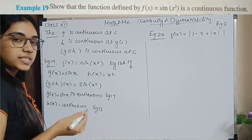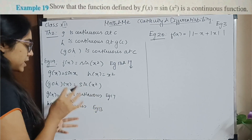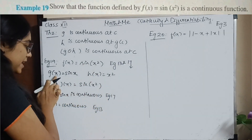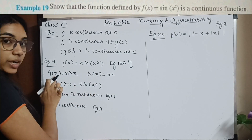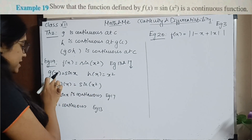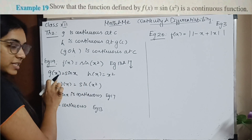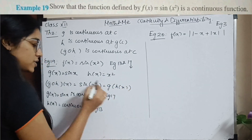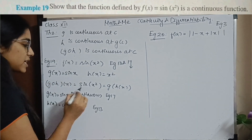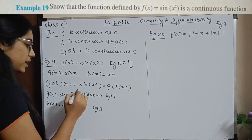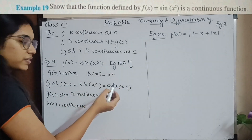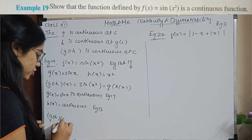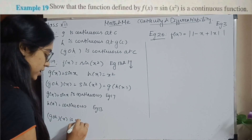We have two different continuous functions combined. G of H(X) = sin(X²) — instead of X I substitute X², which is H(X), giving me G of H(X). Since both G and H are continuous, their composition G of H(X) is also continuous.